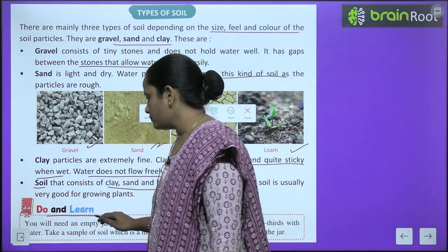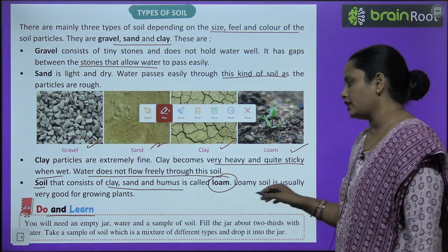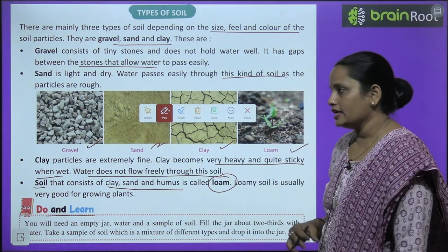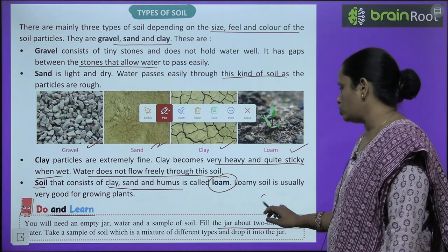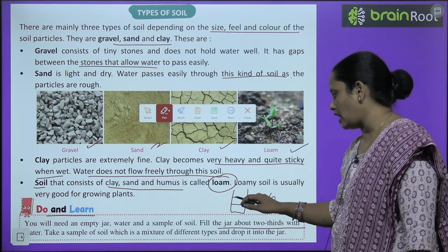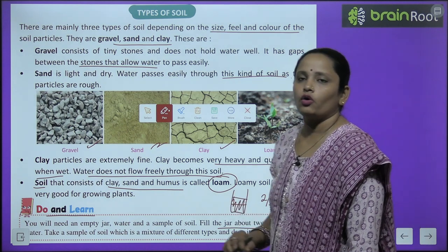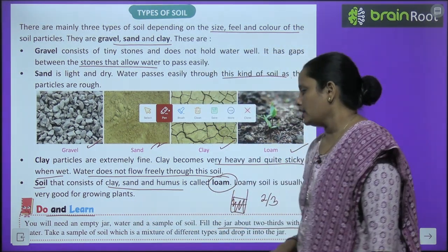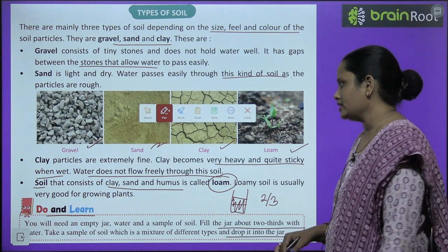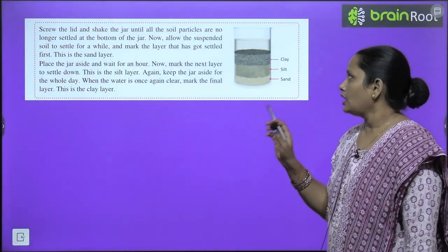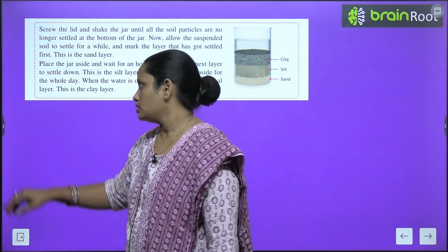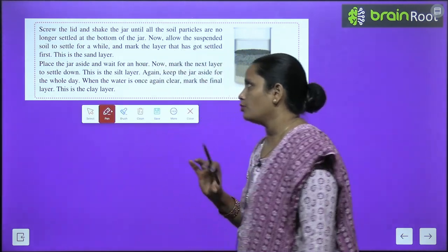Children, you have to do this experiment. You will need an empty jar, water and a sample of soil. Fill the jar about two-thirds with water. Now take a sample of soil which is a mixture of different types, and drop it into the jar. Screw the lid and shake the jar until all the soil particles are no longer settled.